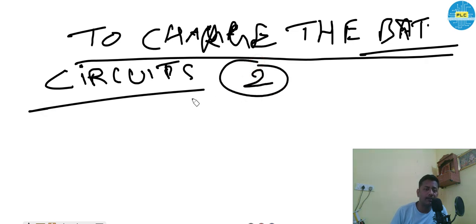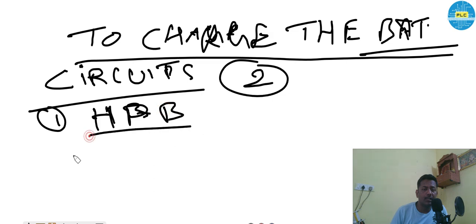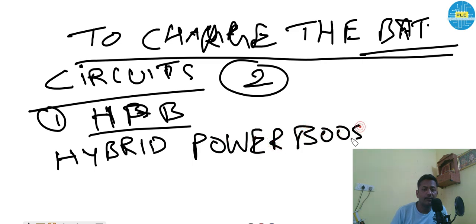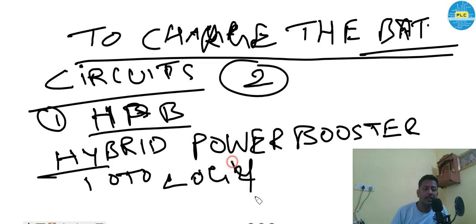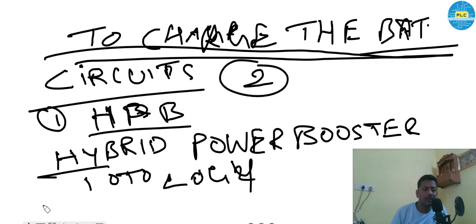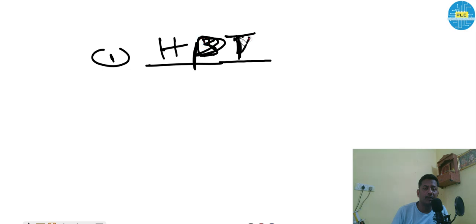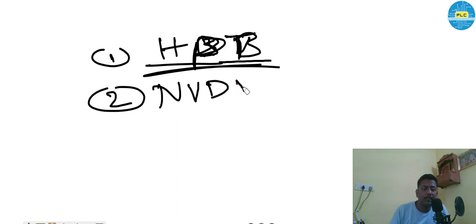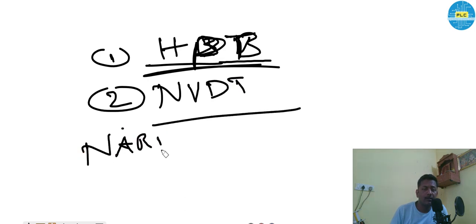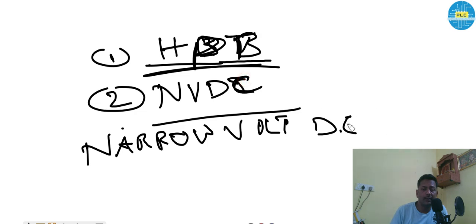There are mainly two types. One is Hybrid Power Booster topology. The second one is NVDC — Narrow Voltage Direct Current topology.